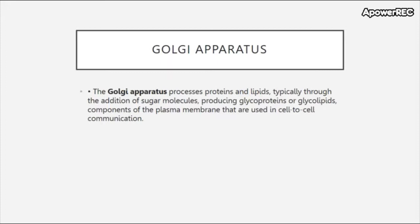Let's discuss the Golgi apparatus. The Golgi apparatus processes proteins and lipids — not breaking them down, just processing them before they go on to do further tasks in the cells. Typically it does this by adding sugar molecules to those proteins and lipids. In doing so, it produces glycoproteins — sugar proteins — or glycolipids, which are sugar lipids. These are very important as components of the plasma membrane used in cell-to-cell communication. This process is called glycosylation — the addition of a sugar molecule.